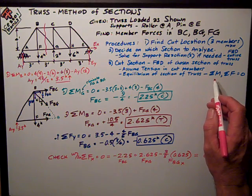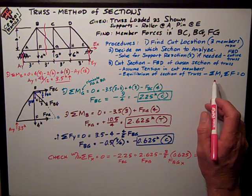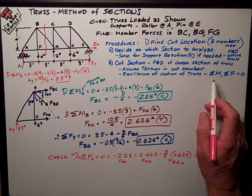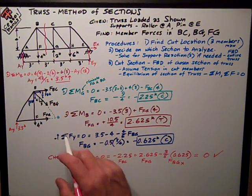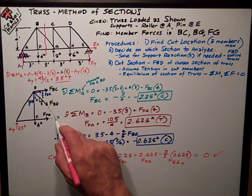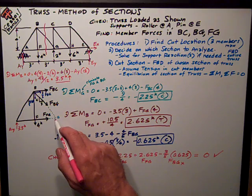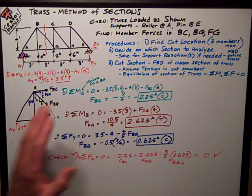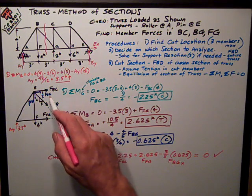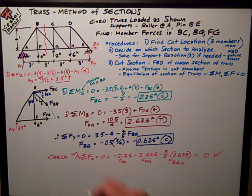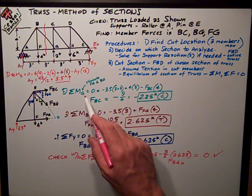So the most powerful tool that we have is these sum of moments equations. And we want to try to find a point that has the intersection of two of the member forces. And so an obvious one is this point down here, G. Both FBG, or BG and FG both intersect there. So I eliminate those from my moment equation by sum of moments about G. And the only variable I have is FBC.